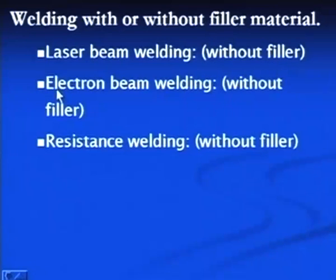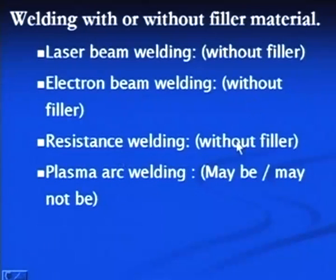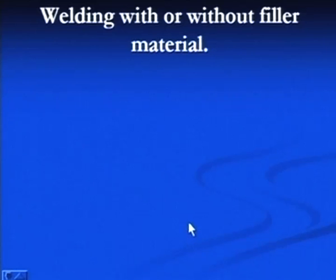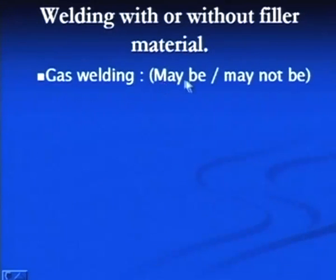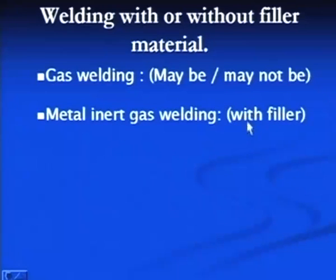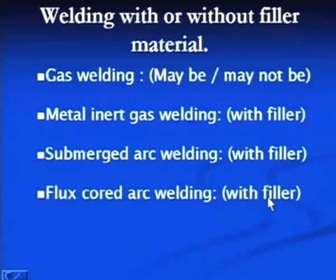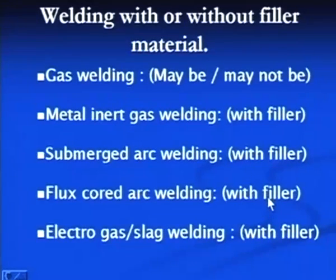Electron beam welding is done without filler metal. Resistance welding is done without filler metal. In plasma arc welding, filler metal may or may not be used. In tungsten arc welding, filler metal may or may not be used. Metal inert gas welding uses filler metal. Submerged arc welding is carried out with filler metal where the consumable electrode acts as filler metal. Flux cored arc welding also uses filler metal. Electro gas and electro slag welding are performed with filler metal.